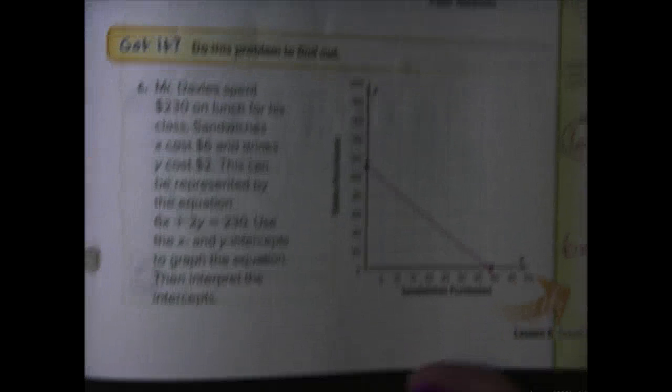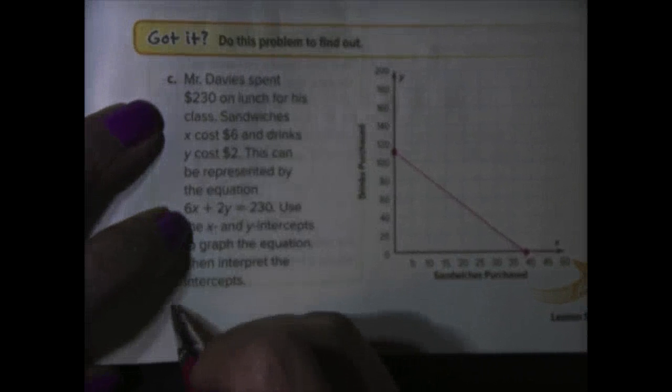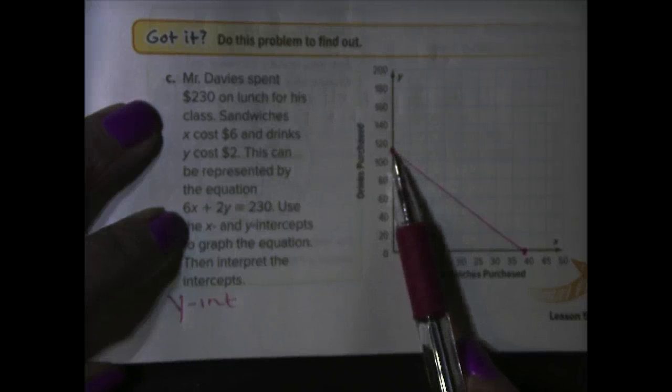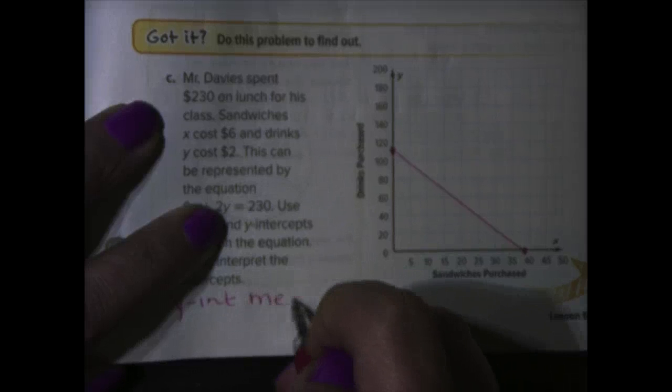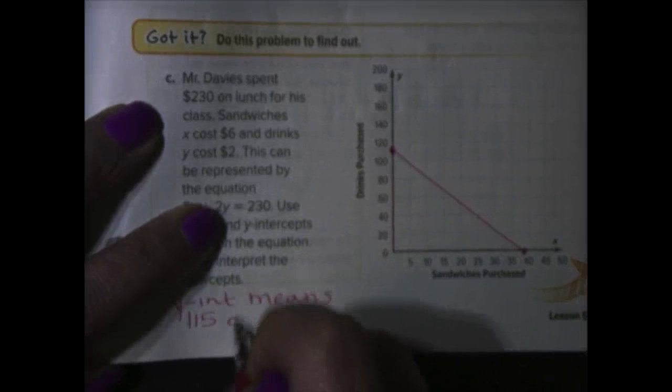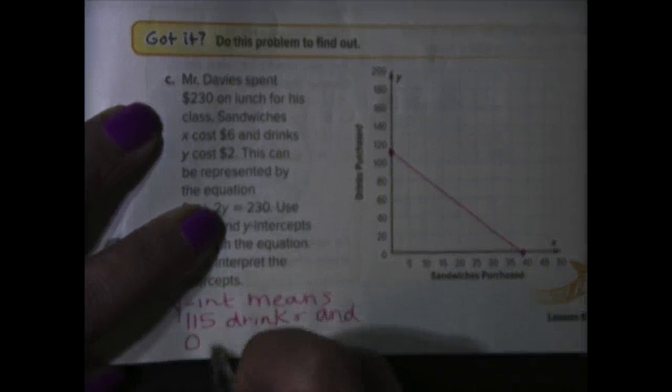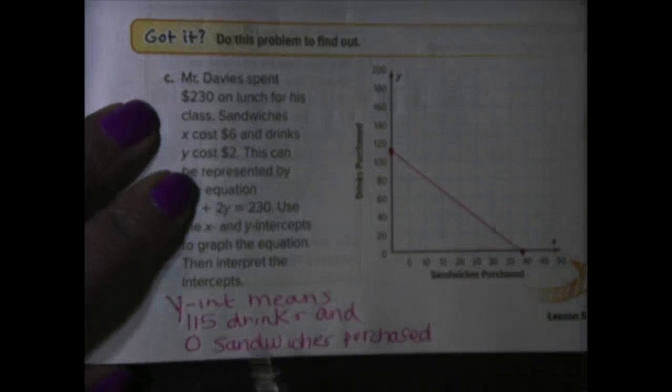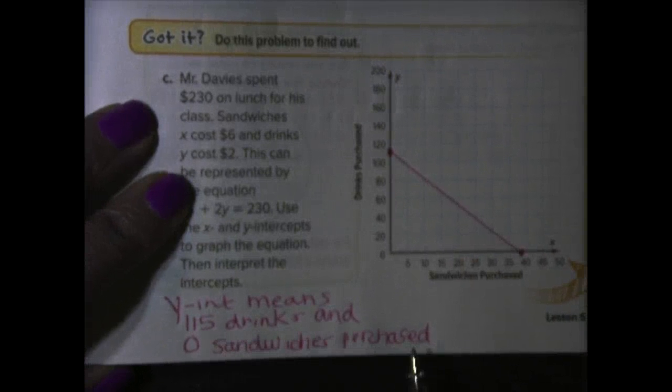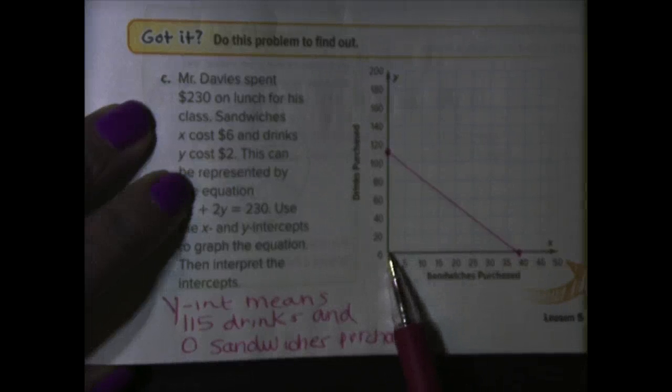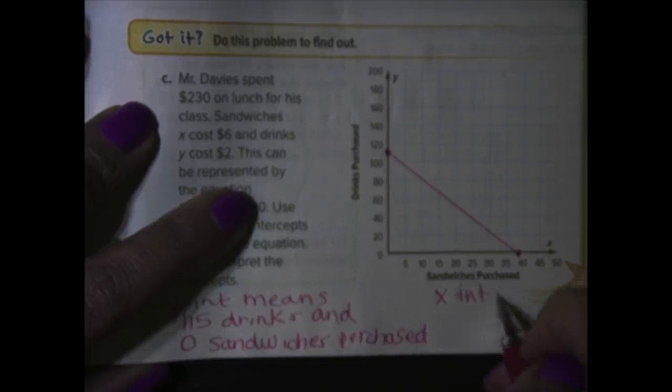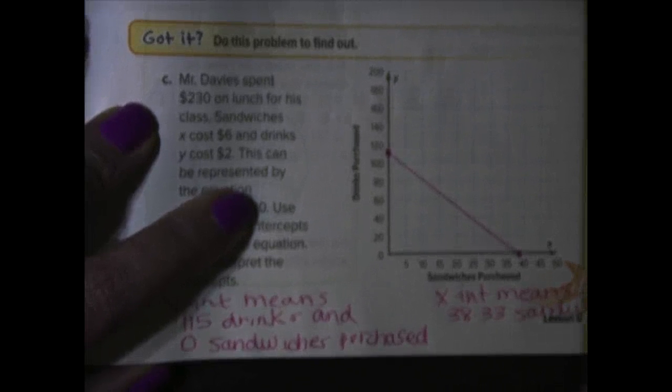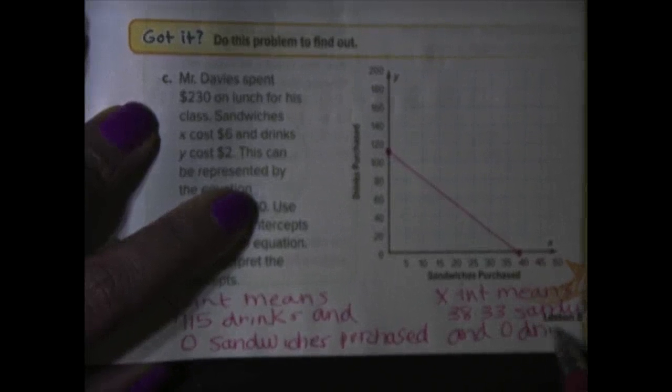Now, it wants us to interpret what these mean, so let's take a look at them. So, at the Y-intercept, the Y-intercept means that at zero sandwiches, we could purchase 115 drinks and no sandwiches. So, the Y-intercept means 115 drinks and zero sandwiches purchased. The X-intercept means 38.33 sandwiches and zero drinks purchased.